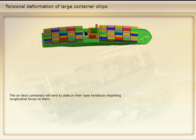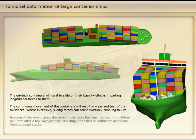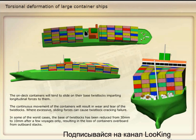The on-deck containers will tend to slide on their base twist locks, imparting longitudinal forces to them. The continuous movement of the containers will result in wear and tear of the twist locks. Where excessive, sliding forces can cause twist lock cracking failure. In some of the worst cases, the base of twist locks has been reduced from 30 mm to 10 mm after a few voyages only, resulting in the loss of containers overboard from outboard stacks.